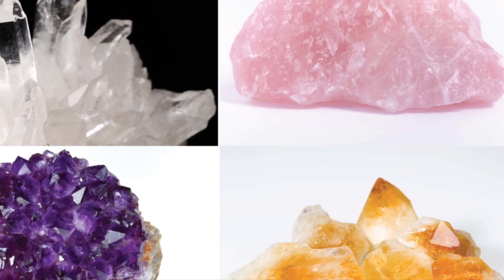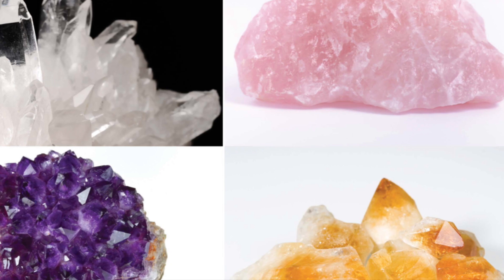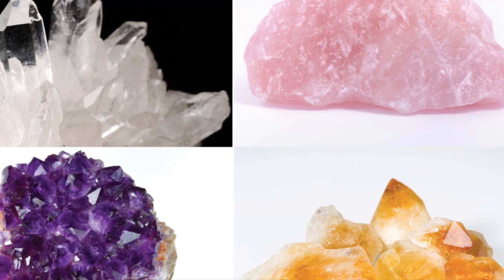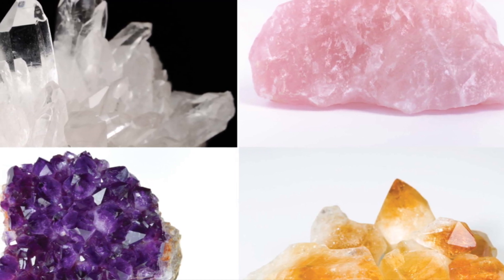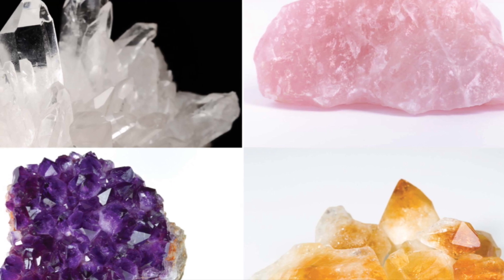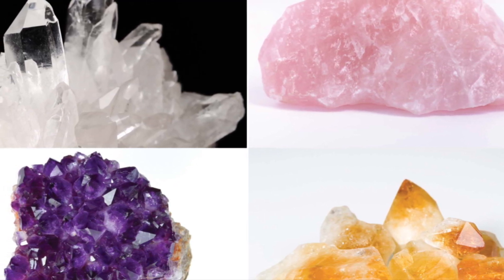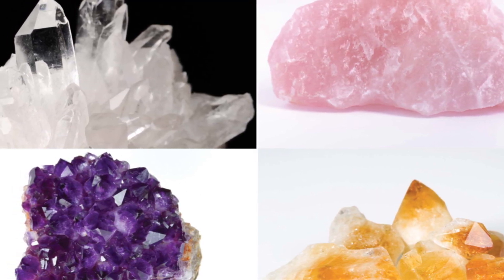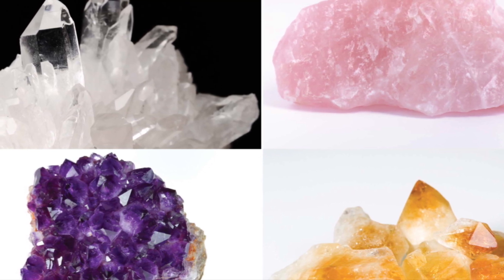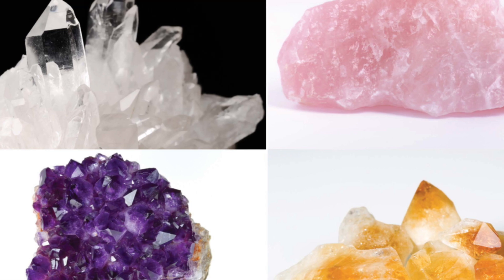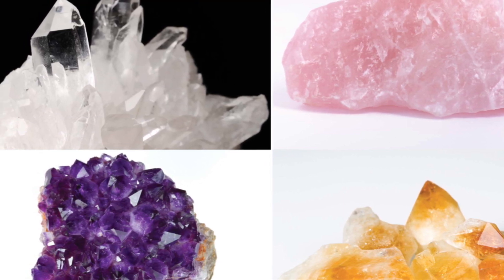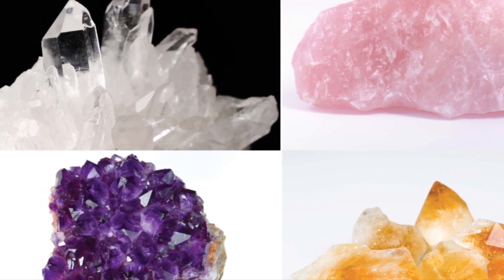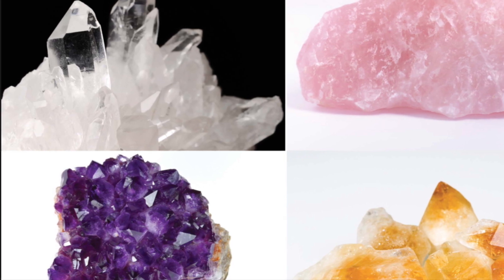Quartz comes in many varieties. Those are clear quartz crystals on the top left. Some minerals form into perfect crystals like these, and some don't. It all depends on where and how they are formed within the Earth. Crystals can come in all different sizes — some as small as a pea, some the size of your arm or longer. The color variations in different types of quartz are largely caused by the addition of very small amounts of various types of metals. For instance, the beautiful purple color of amethyst is caused by traces of iron and aluminum.